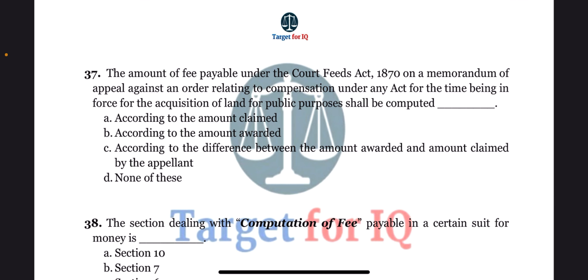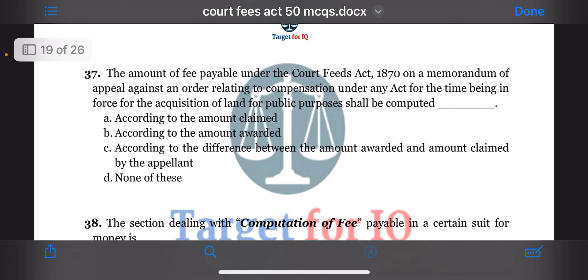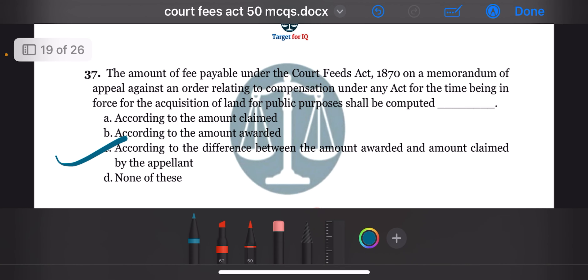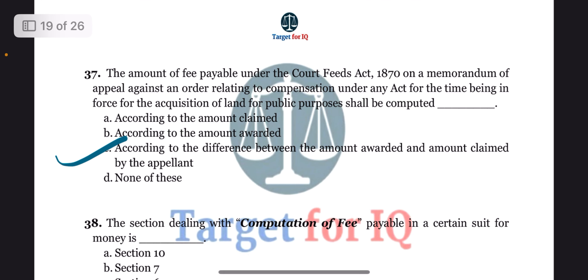Next question: the amount of fee payable under this act on a memorandum of appeal against an order relating to compensation under any act for the time being in force for the acquisition of land for public purposes shall be computed dash. The options are A. According to the amount claimed, B. According to the amount awarded, C. According to the difference between the amount awarded and the amount claimed by the appellant, or D. None of these. The correct answer is option C.